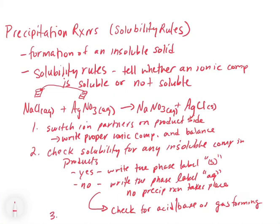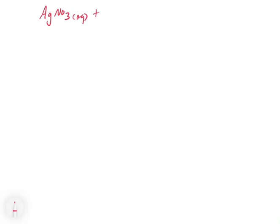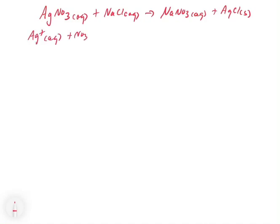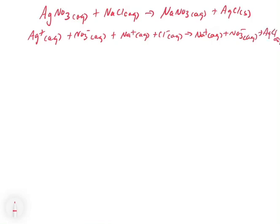And then the last step is: if you have a reaction, you can write the complete and the net ionic equation as needed. So if the problem asks us to write the net ionic equation, we have our products — NaNO3 aqueous and AgCl solid. To write the complete ionic equation, we break up anything that's aqueous: Ag⁺ aqueous + NO3⁻ aqueous + Na⁺ aqueous + Cl⁻ aqueous gives Na⁺ aqueous + NO3⁻ aqueous + AgCl solid.